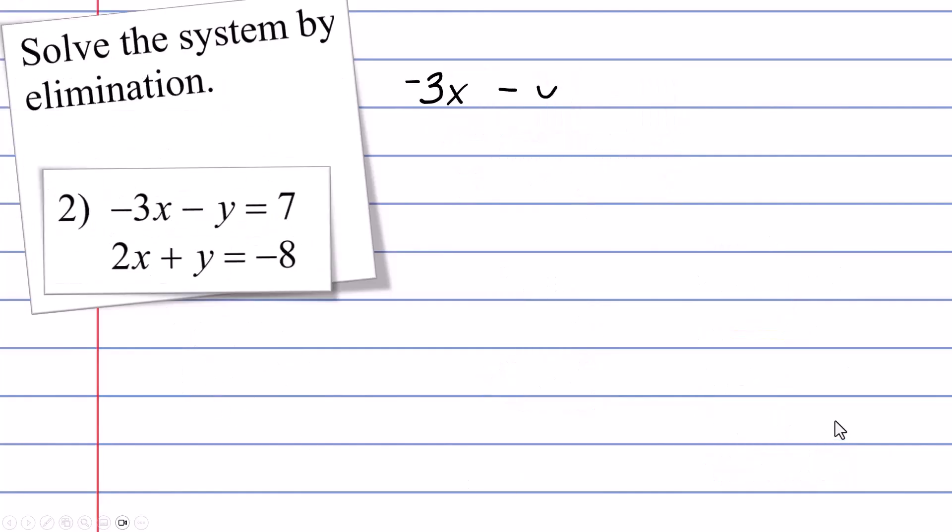All right, number two. Well, I write them down and take a look. The x's will not eliminate. The coefficients are different, but the y's will. When we combine these, they are going to eliminate. So there's my zero right there. You can only solve for one variable at a time. So the idea here is to get rid of one right off the bat. Now when we do the x's, I have negative 3x combined with a positive 2x. That's going to give me negative 1x. And over here on the other side where the numbers are, I have a positive 7 and a negative 8. That's going to give me a negative 1.